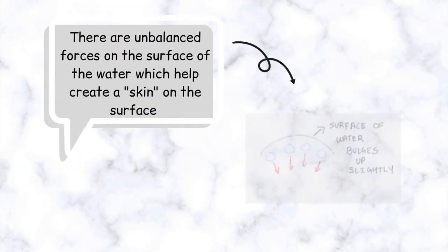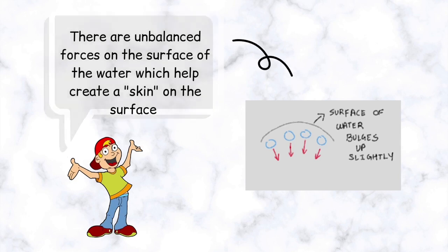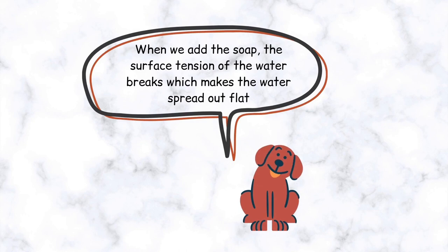However, the molecules at the top of the water do not have any force pulling them up over the surface. The forces acting here are called unbalanced forces because the force acting downwards is higher than the force acting upwards and so it doesn't get cancelled out. This causes a skin to form on the surface of the water.